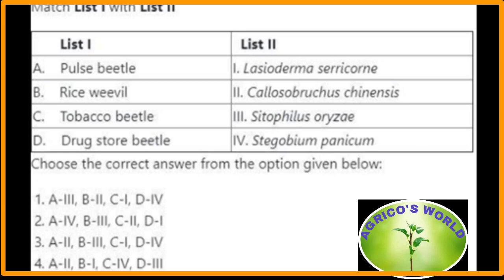The pulse beetle's scientific name is Callosobruchus chinensis. The scientific name of the rice weevil is Sitophilus oryzae. The tobacco beetle is Lasioderma serricorne. The scientific name of the drugstore beetle is Stegobium paniceum. So here the right option is the third option.